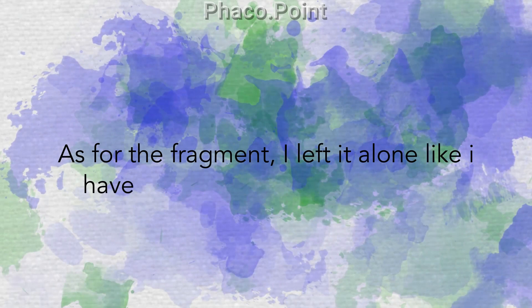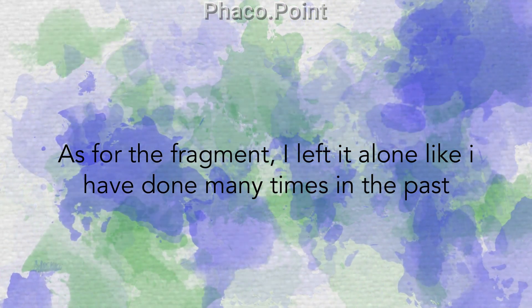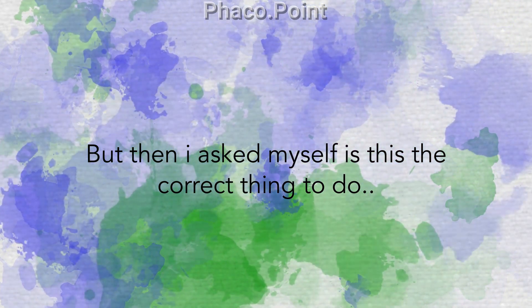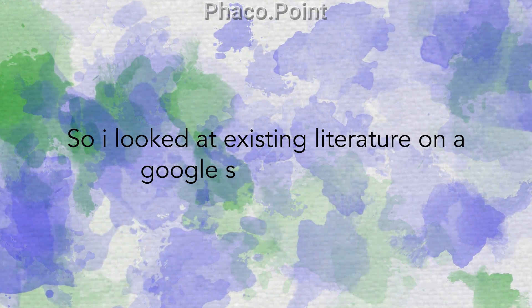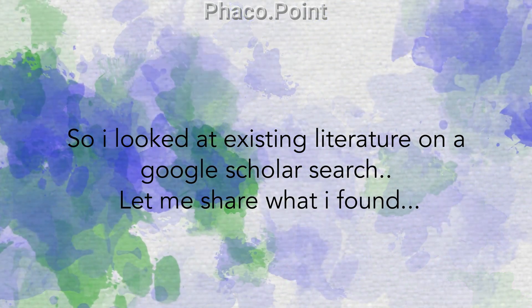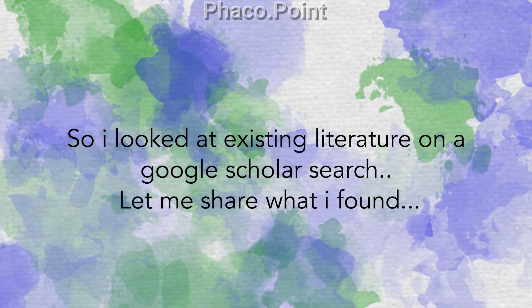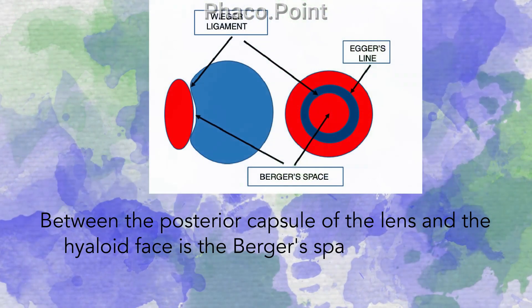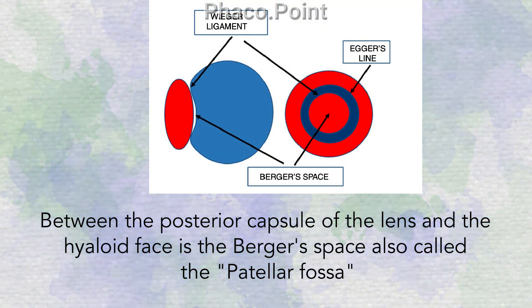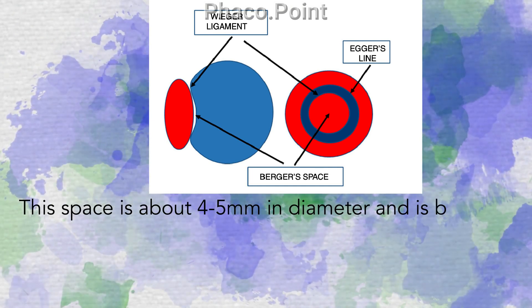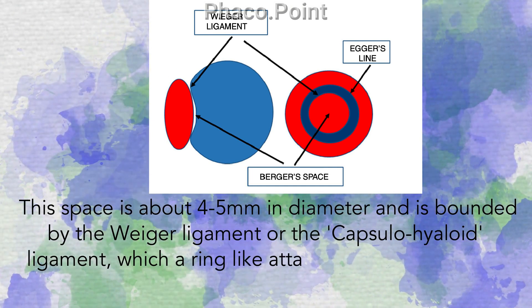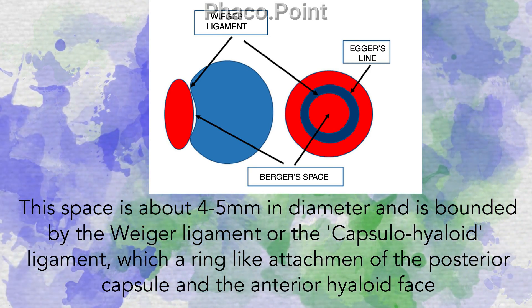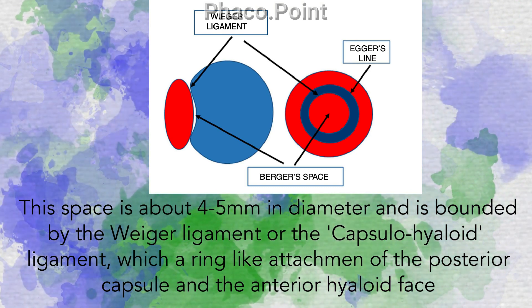As for the fragment, I left it alone, as I have done many times in the past, but I then questioned myself whether this is the correct thing to do. To find the answer, I looked at the existing literature on a Google Scholar search. Between the posterior capsule of the lens and the hyaloid face is the Berger space, also called the patella fossa. This space is about 4-5 mm in diameter.